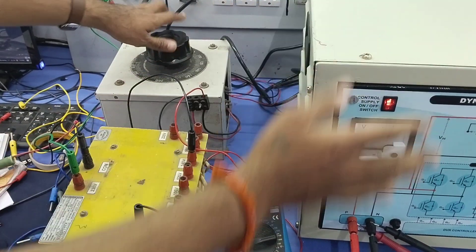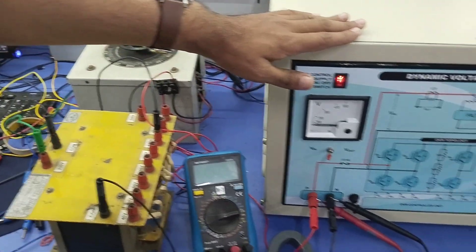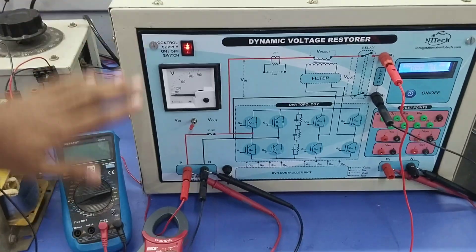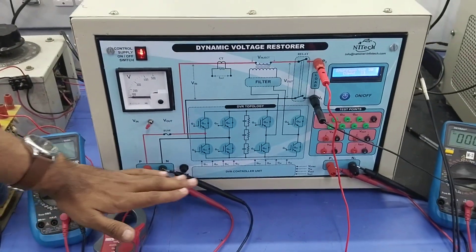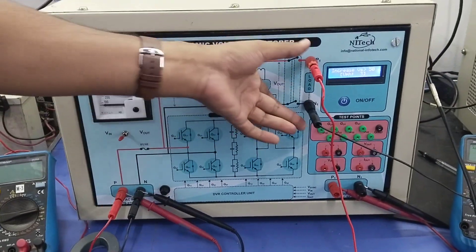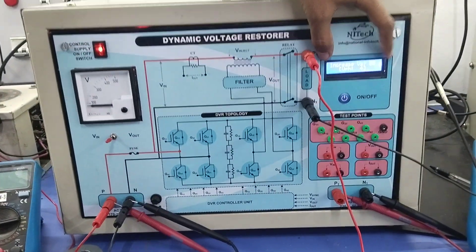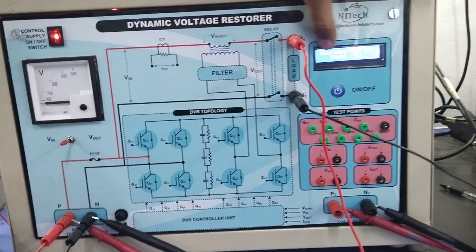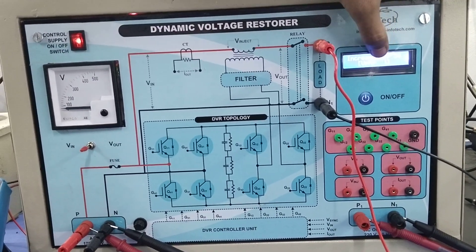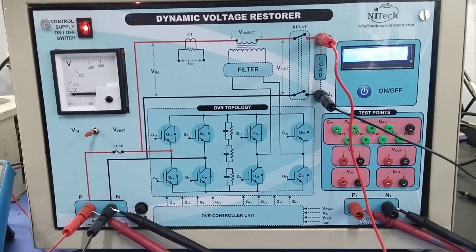So in this setup, the most important terminals are input terminals, load terminals, observation terminals, and start-stop key. And here you can observe the different parameters and different fault conditions also observed in this kit.